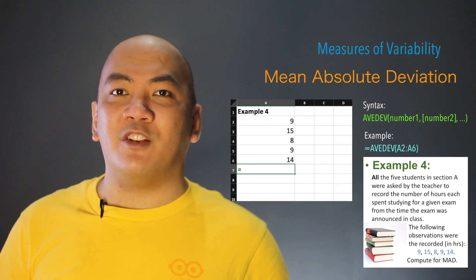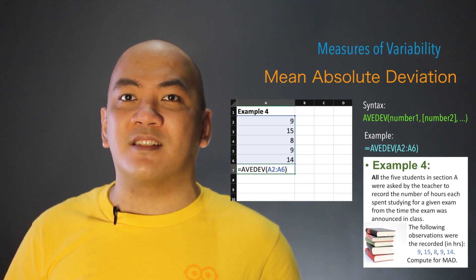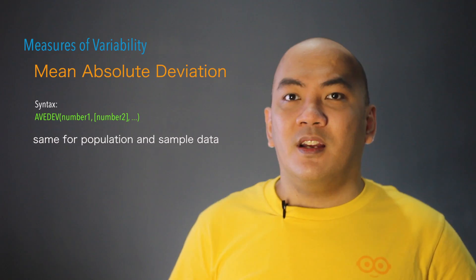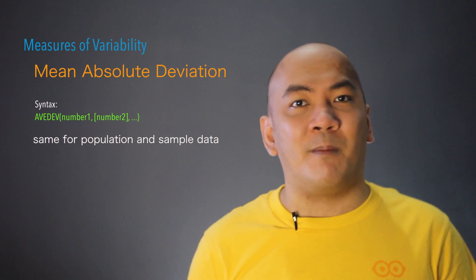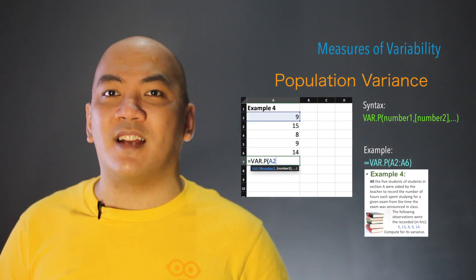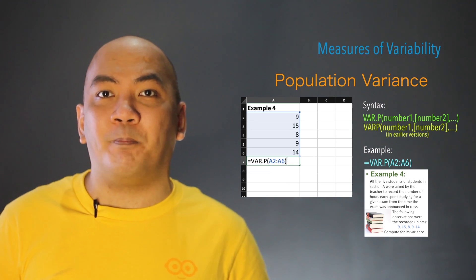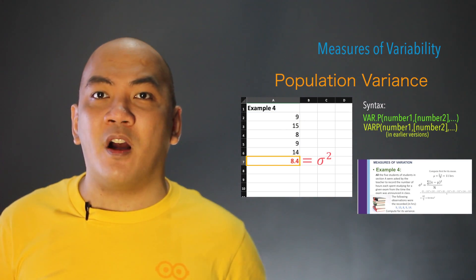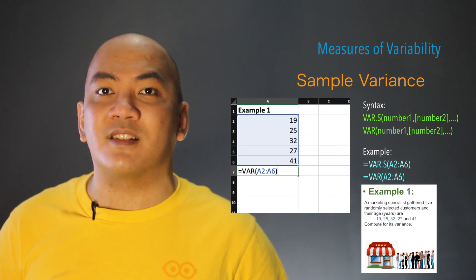For the mean absolute deviation, use the AVEDEV function. Similarly, put the cell reference range of the data in parenthesis, then press the Enter key. Similar to the mean, it doesn't matter whether you're dealing with population or sample data. Variance in Microsoft Excel uses VAR.P — or in earlier versions, VARP — to compute the population variance, and VAR.S — or simply VAR — to compute the sample variance.